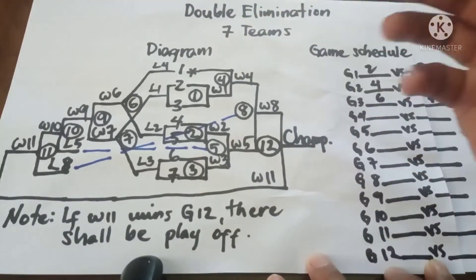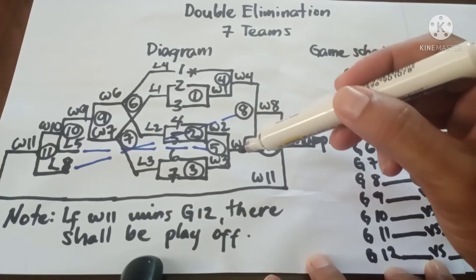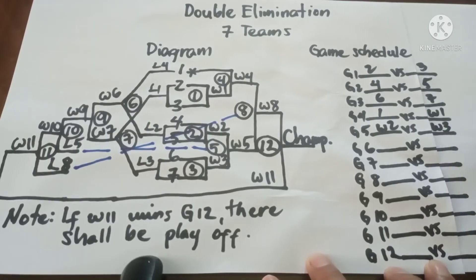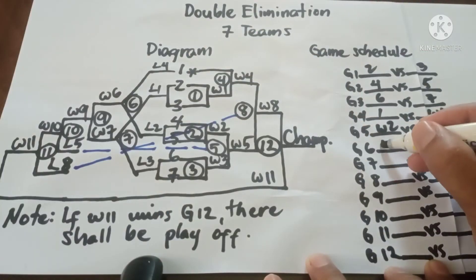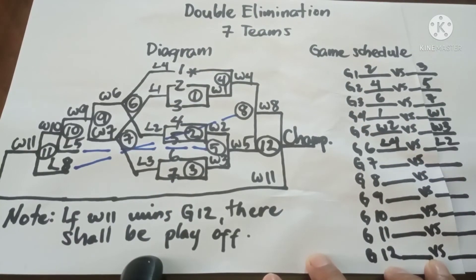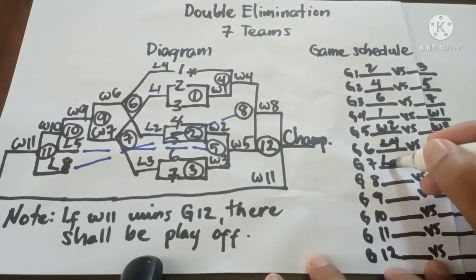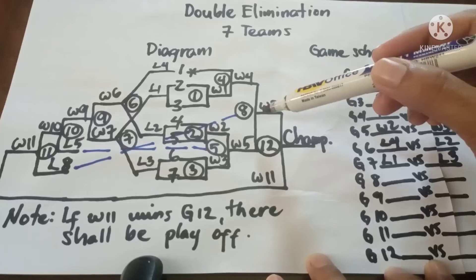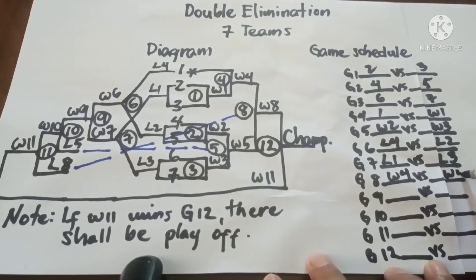Game 4 is 1 vs Winner 1. Game 5 is Winner 2 vs Winner 3. Game 6 is Loser 4 vs Loser 2. Game 7 is Loser 1 vs Loser 3. Game 8 is Winner 4 vs Winner 5.